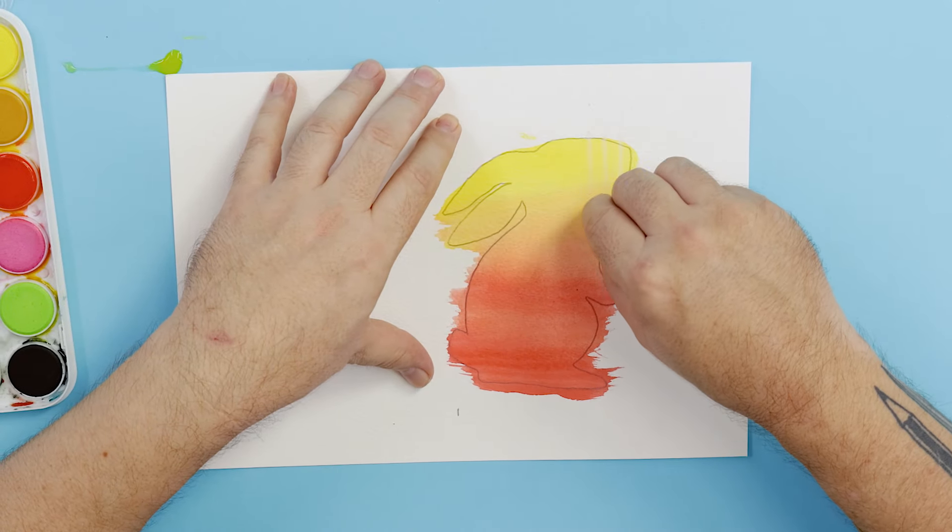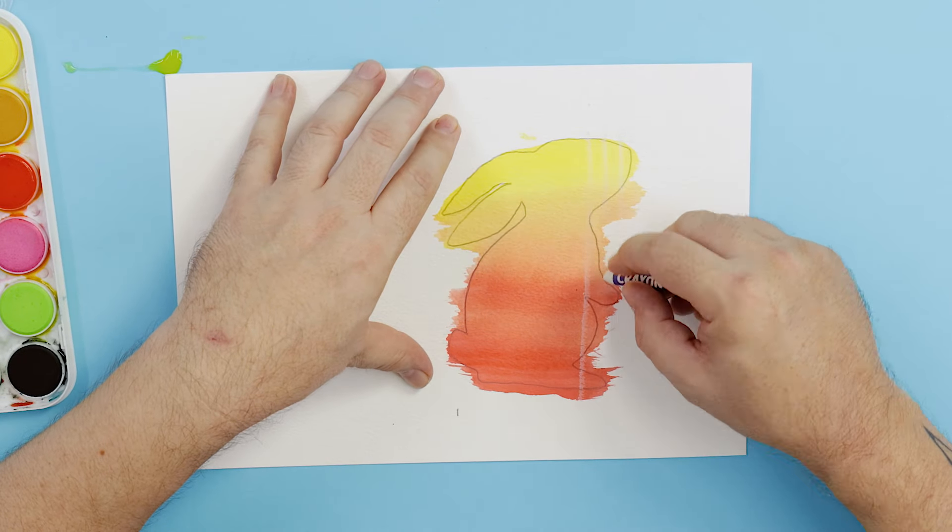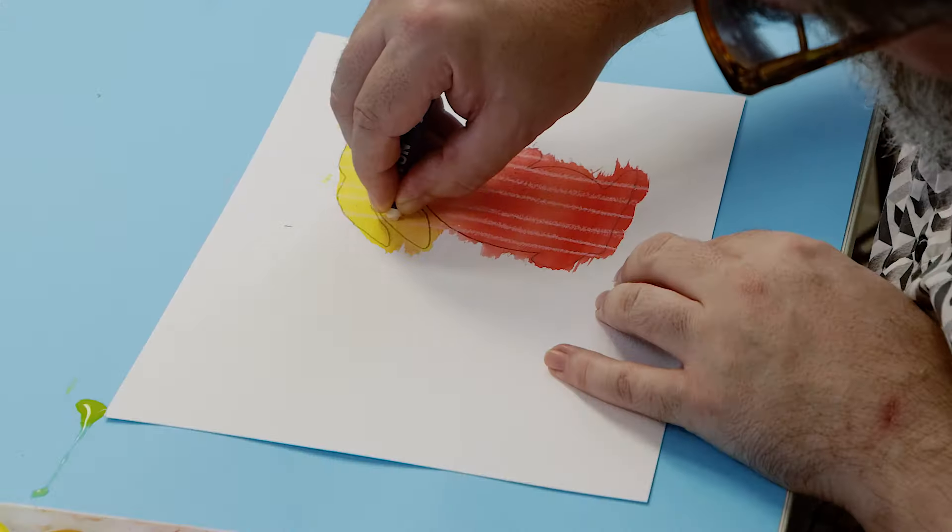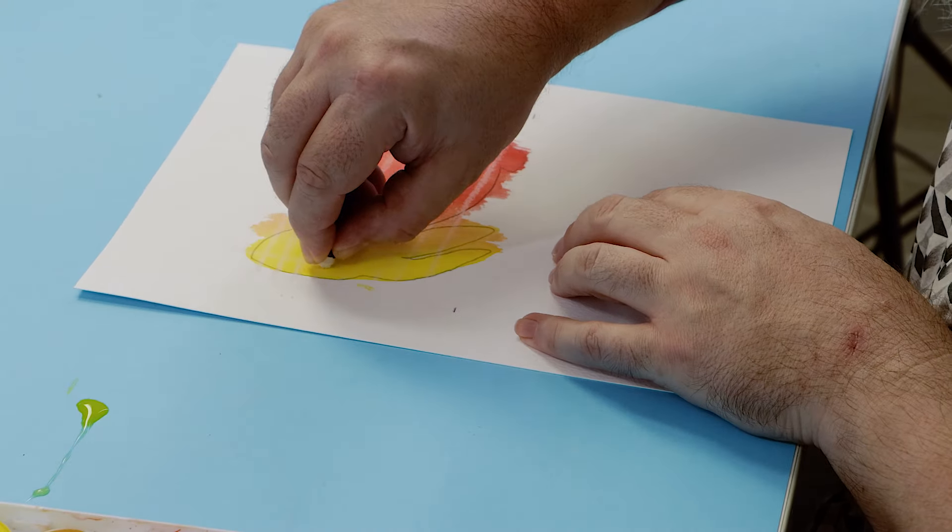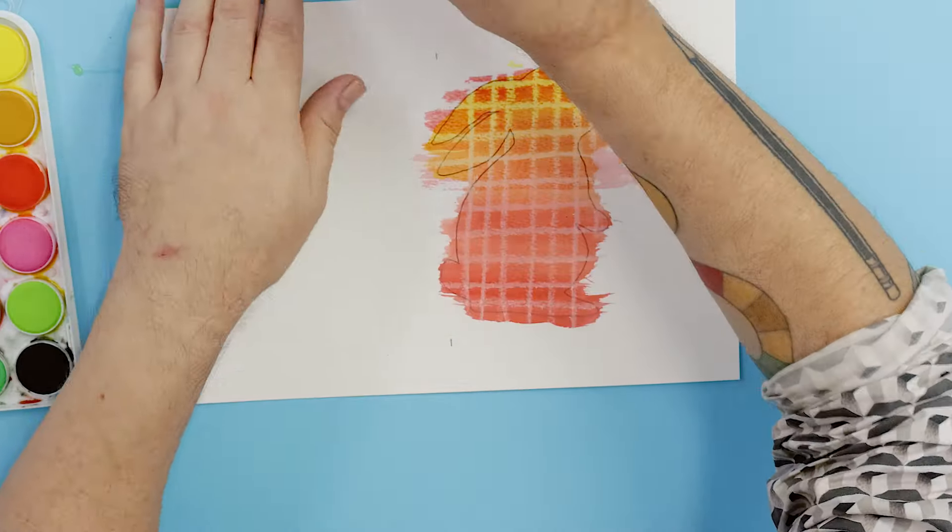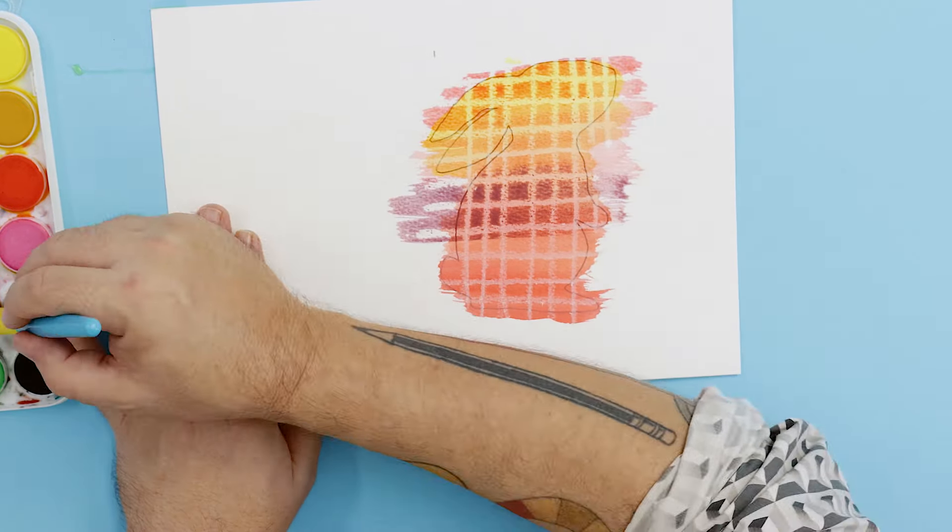We then use that white crayon to draw a series of horizontal lines across the bunny then a series of vertical lines. We can then lay an orange moving on to red and then to blue.